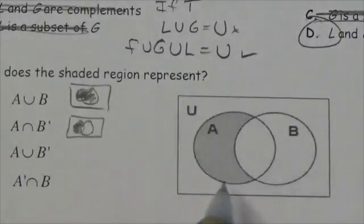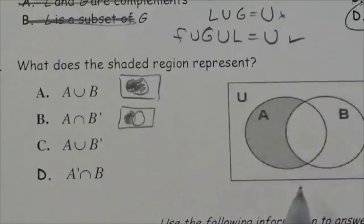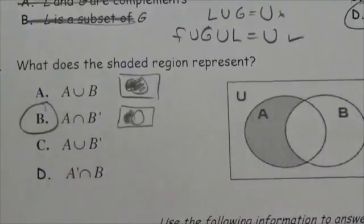It's just this little piece, this cookie with a bite out of it. This is where A intersects the not B. That's the one that I'm looking for.